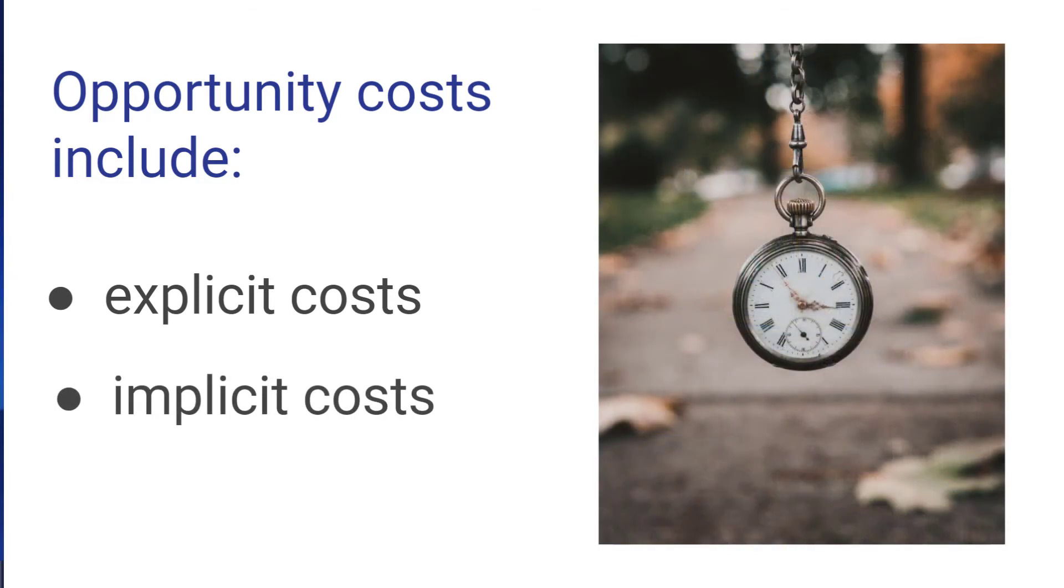But that also has an implicit cost. An implicit cost involves using resources that could have been used in a different way. For example, when you go out to dinner, you're giving up time that you could have used to study. In general, pretty much everything that we do has both explicit costs, things we have to pay for, but also implicit costs in that we're using our time and other resources in different ways.